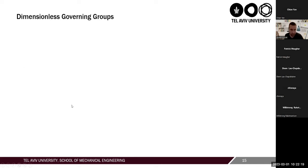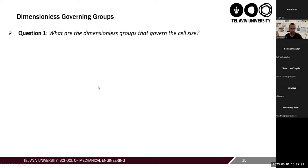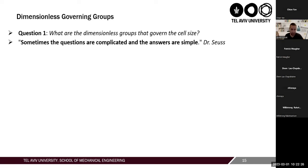Let's start with the first question: what are the dimensionless groups that govern the cell size? I'll invoke a quote by Dr. Seuss, who said that sometimes the questions are complicated and the answers are simple. In this case, the answer is relatively simple, though we need several assumptions to show this.